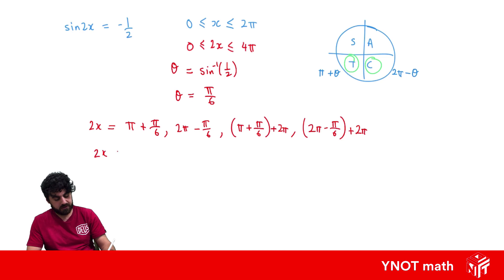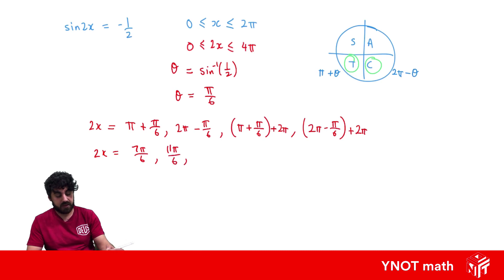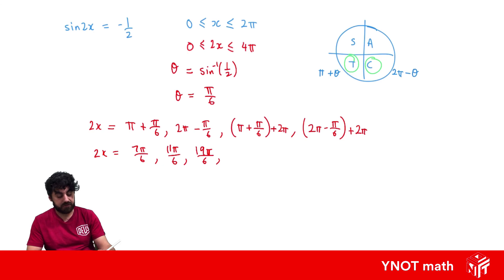So 2x equals 7π/6 from the third quadrant, and 2π − π/6 = 11π/6 from the fourth quadrant. Adding 2π to each of those: 7π/6 + 2π = 19π/6, and 11π/6 + 2π = 23π/6. So we have four values of 2x: 7π/6, 11π/6, 19π/6, and 23π/6.